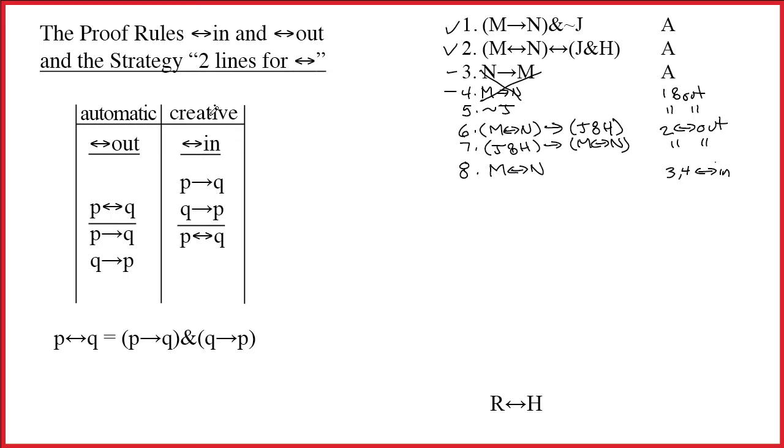And so, I'm going to cite 3, 4 double-arrow in as its justification. 6 was the inspiration. And, in fact, I just used a creative rule. Double-arrow in. You should never be creative unless you know exactly why you're doing it. But I know exactly why I'm doing it. It's because on line 9 I want to do the arrow out and get J and H.